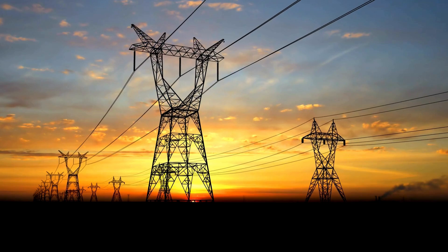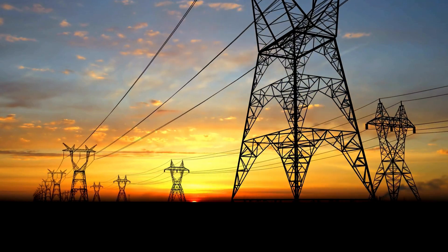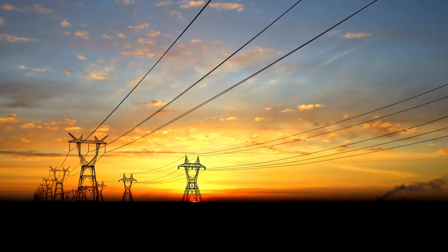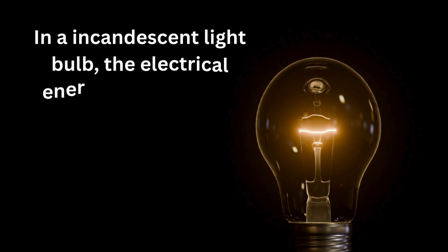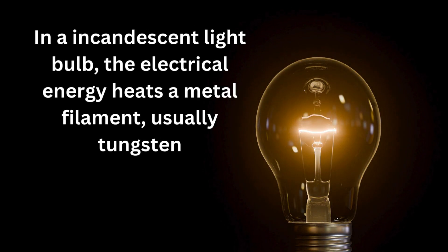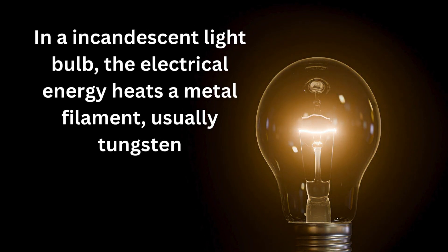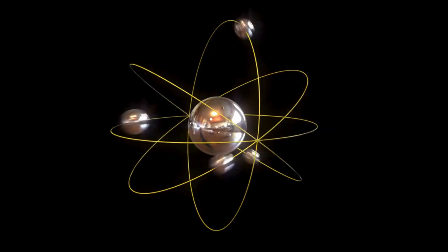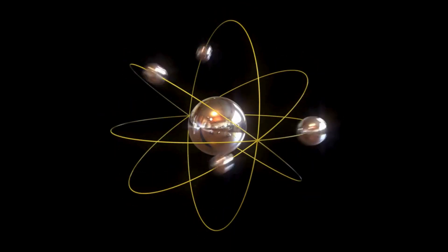In a typical incandescent light bulb, the electrical energy heats a metal filament, usually tungsten. As the filament gets hotter, it excites the electrons within the atoms of the tungsten. When these electrons gain energy, they move to higher energy levels, or excited states.